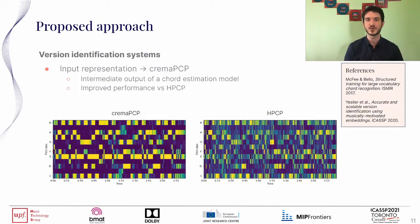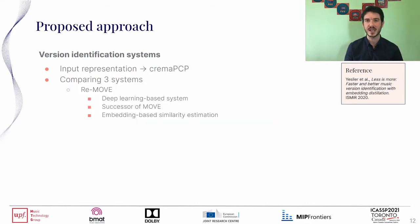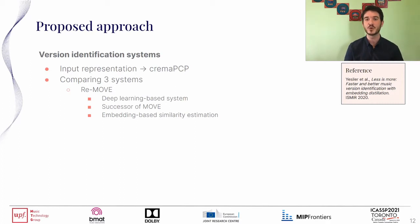CREMA-PCP is an intermediate output of a chord estimation model. In previous works, we saw that it achieves improved performance against HPCP. For the version identification part, we compare three systems. First is REMOVE, a deep learning-based system and successor of MOVE, presented at ICASSP last year. It is an embedding-based system, meaning tracks and windows are encoded into embedding vectors, and similarity estimation is done by computing Euclidean or cosine distance between these embeddings.